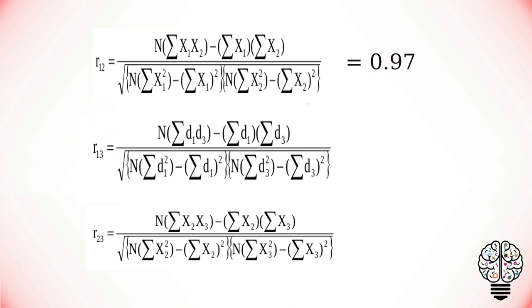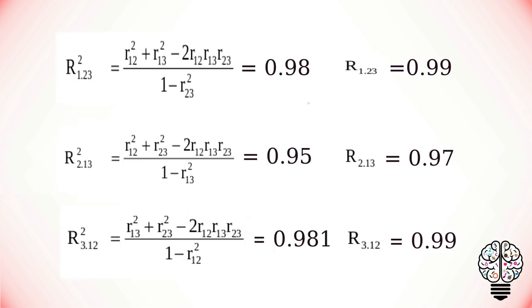These are the formulas for them. If we substitute the values, we will get our r12 value as 0.97, r13 value as 0.99, and r23 value as 0.97. With that we can calculate our coefficients.